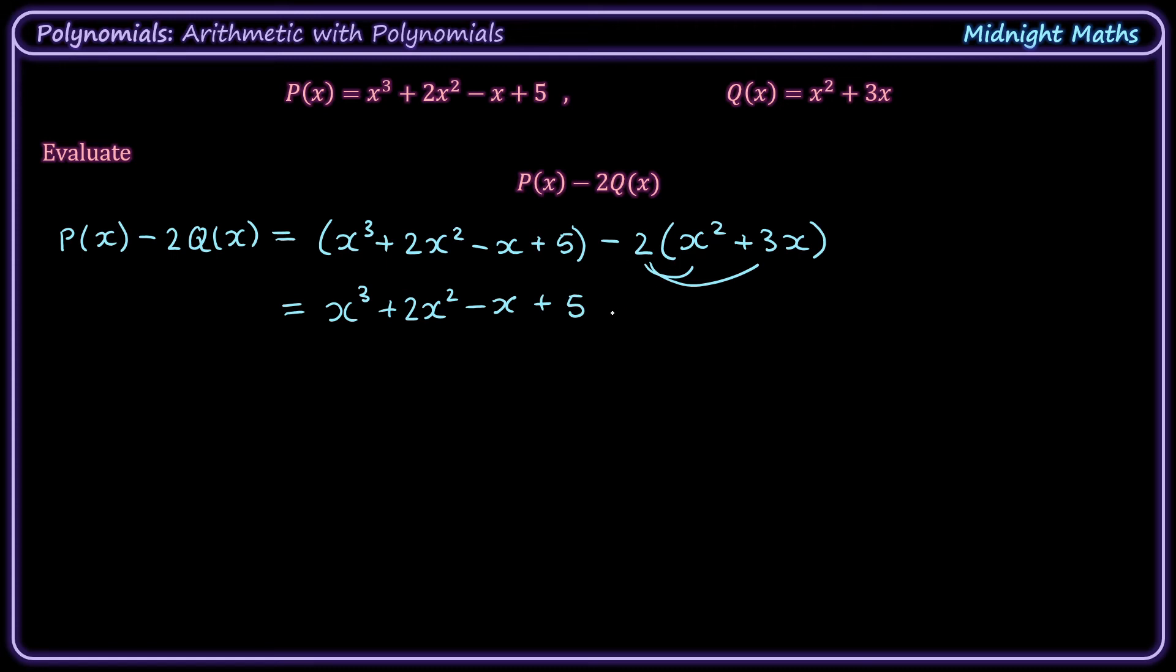Now, minus 2 times x squared is minus 2x squared. Minus 2 times 3x is minus 6x.